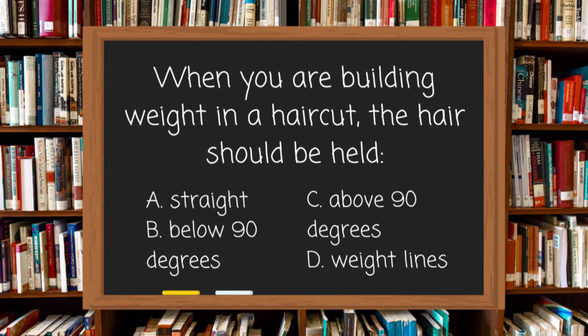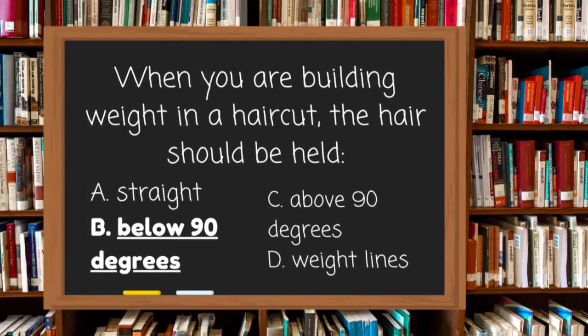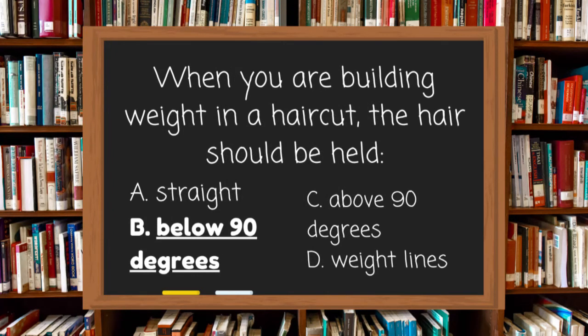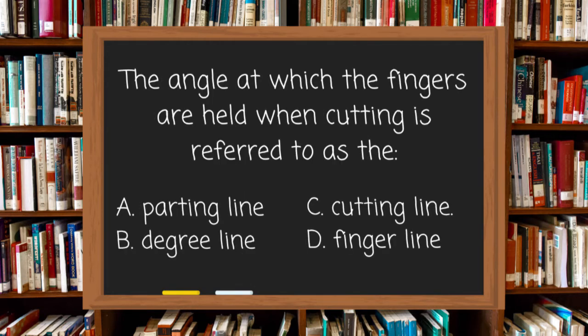When you are building weight in a haircut, the hair should be held: A. Straight, B. Below 90 degrees, C. Above 90 degrees, or D. Weight line. The answer is B, below 90 degrees. Remember, to build weight, the hair must be held below 90 degrees.